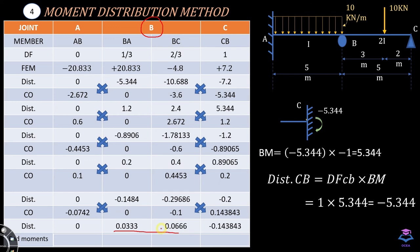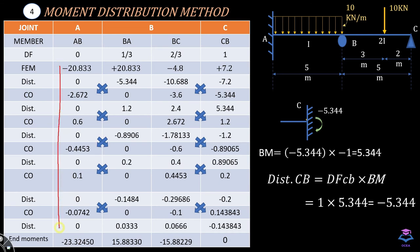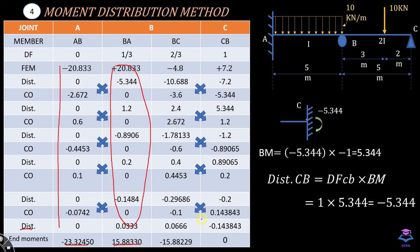To obtain the final end moments, add all values in each column from the FEM row through the last distribution row. The end moment MAB is acting in the counterclockwise direction (negative), MBA is acting in the clockwise direction (positive), and so on.